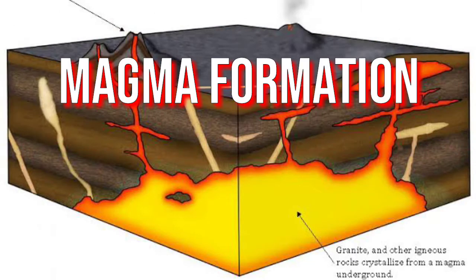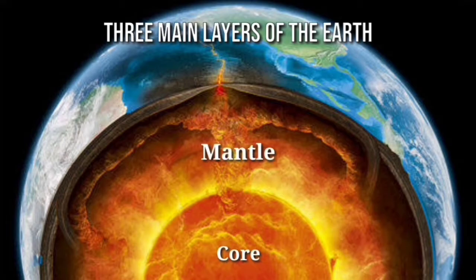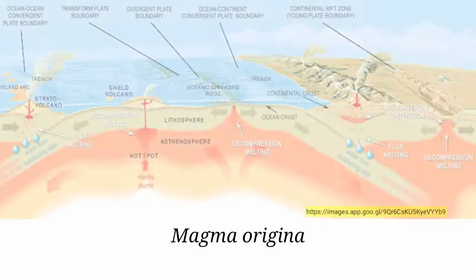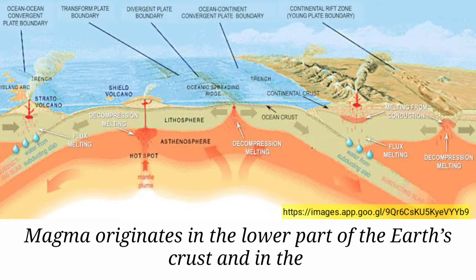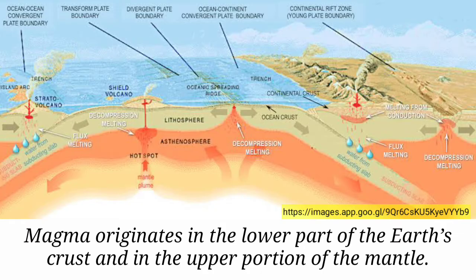Now, let's discuss magma formation. Earth is divided into three general layers. The core is the superheated center, the mantle is the thick middle layer, and the crust is the top layer on which we live. Magma originates in the lower part of the Earth's crust and in the upper portion of the mantle. Differences in temperature, pressure, and structural formations in the mantle and crust cause magma to form in different ways.